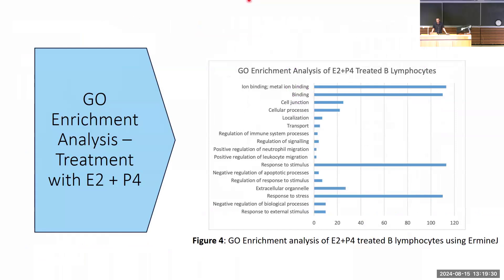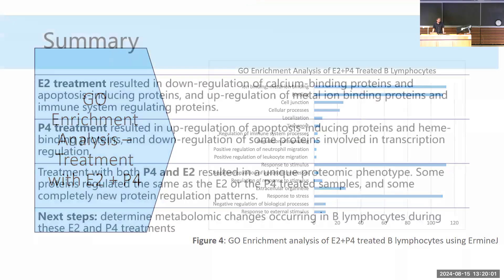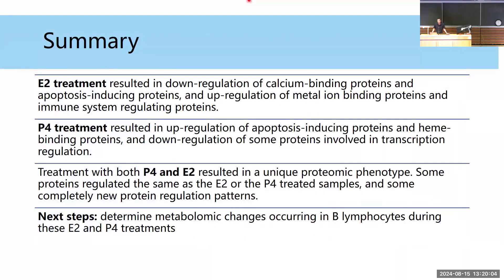The B cells were also treated with both hormones simultaneously, which resulted in a unique proteomic phenotype. Some proteins were regulated similarly to individual estradiol or progesterone treatment, but there were also completely new protein regulation patterns. Enriched GO terms from the combined treatment include regulation of neutrophil and leukocyte migration and negative regulation of biological processes. Please come visit me at poster two if you have more questions or want to hear about the data processing and analysis.